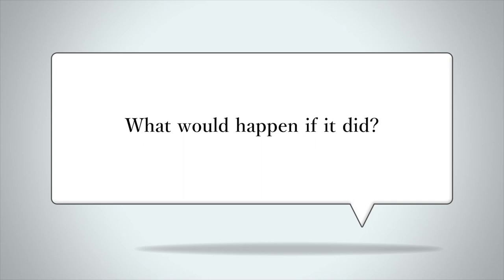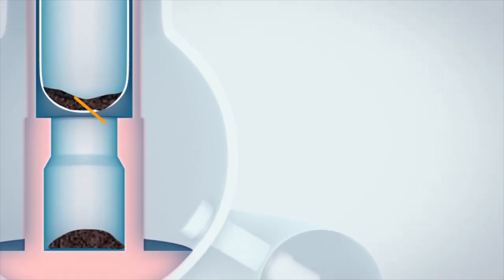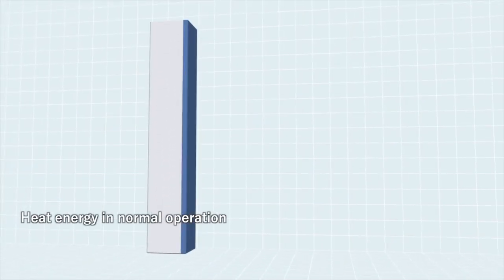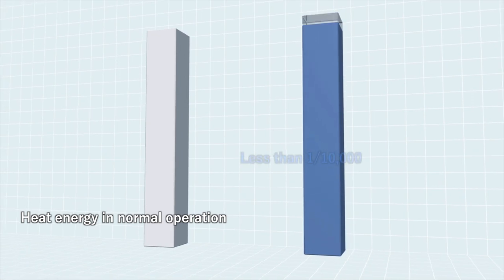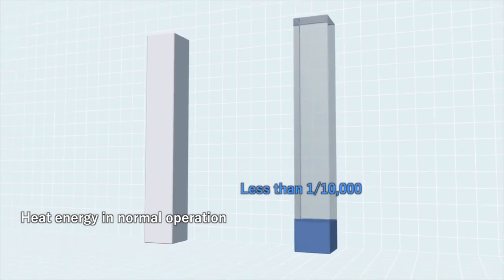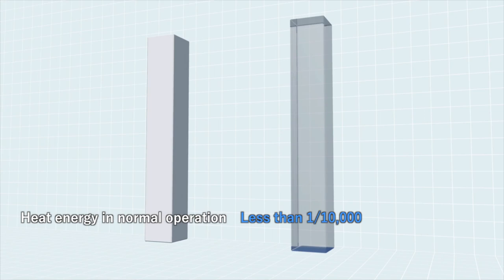What would happen if recriticality occurs? The external impacts of recriticality have been simulated. The radiation generated from recriticality cannot pass through the concrete walls surrounding the reactor. The heat energy that would be generated from recriticality has been determined to be less than one ten-thousandth of the energy used to rotate the turbines in normal operation. The external impact should be extremely small, even if radioactive gas generated from recriticality were to leak outside of the power station.